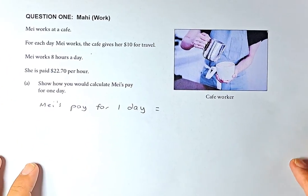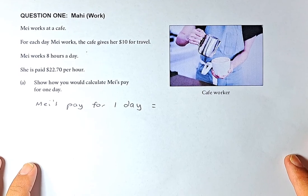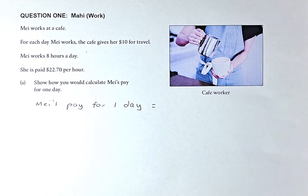The first question: Mei works at a cafe. For each day Mei works, the cafe pays her $10 for travel. Mei works 8 hours a day. She is paid $22.70 per hour. Show how you would calculate Mei's pay for one day. So Mei's pay for one day is the number of hours she works at a rate of $22.70 plus $10 for travel.